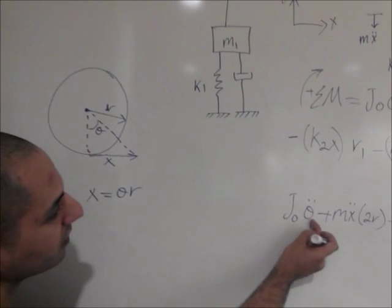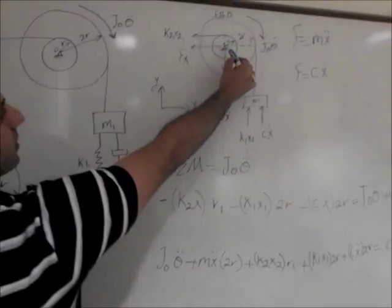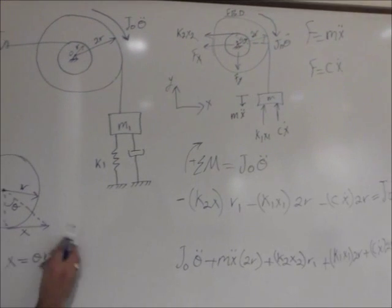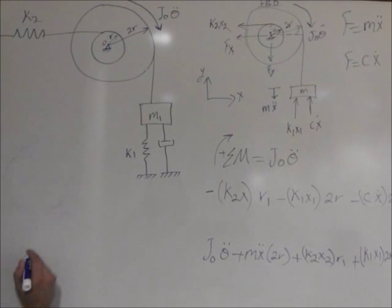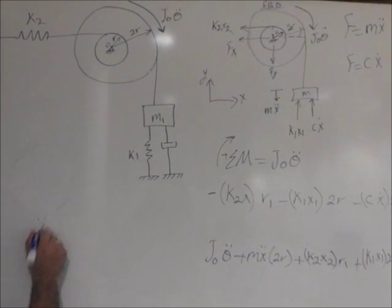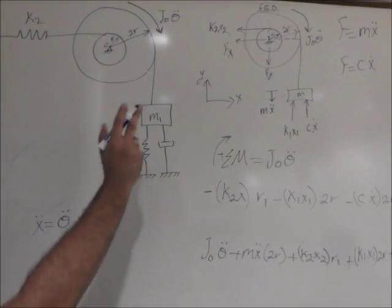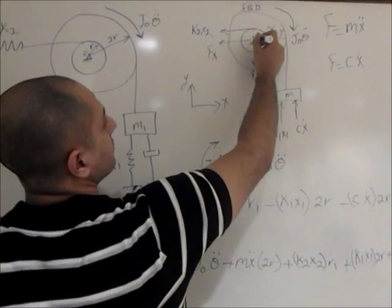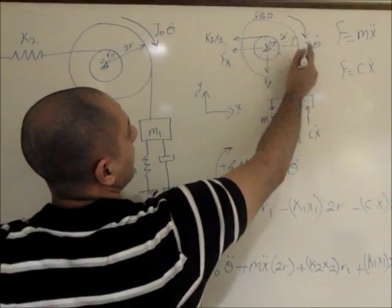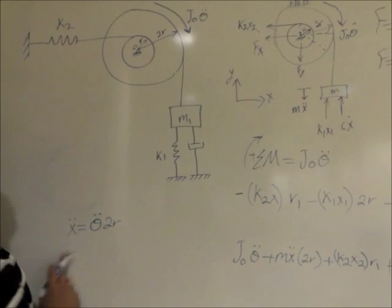So breaking that part, let's translate every term of theta into x. So looking at theta double dot, you would automatically know. Look over here. We know that x double dot equals theta double dot times 2r. So if you look at it this way, and if you said that this is actually theta, and you just want to know the distance, x double dot equals this.